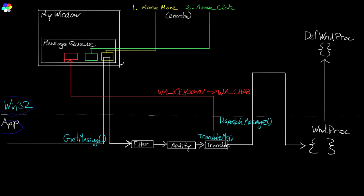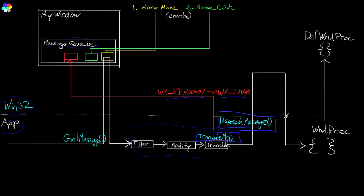Let's look at how we process messages in Windows. We've got two sides: the Win32 side and the app side. On the Win32 side, Windows manages a bunch of data for your window including a queue of messages. When you move the mouse or do a mouse click, Windows processes that input and puts those messages onto your queue. In your application, when you're ready, you call GetMessage and pull one message off the queue. There's also TranslateMessage — if the message is a key-down message it will generate an additional WM_CHAR message and put that on the queue.